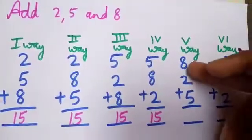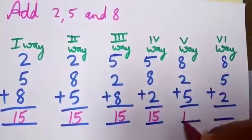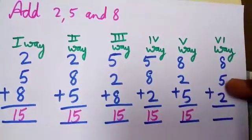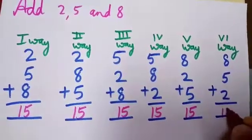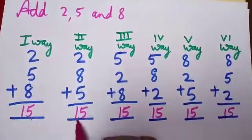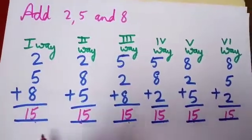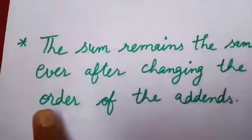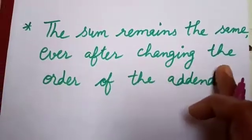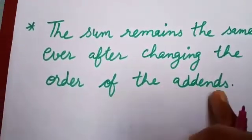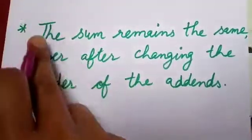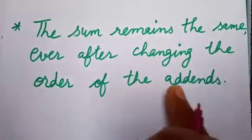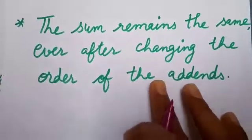Fifth way: 8 plus 2 is 10, and 10 plus 5 is 15. Sixth way: 8 plus 5 is 13, and 13 plus 2 is 15. The sum remains the same even after changing the order of the addends.